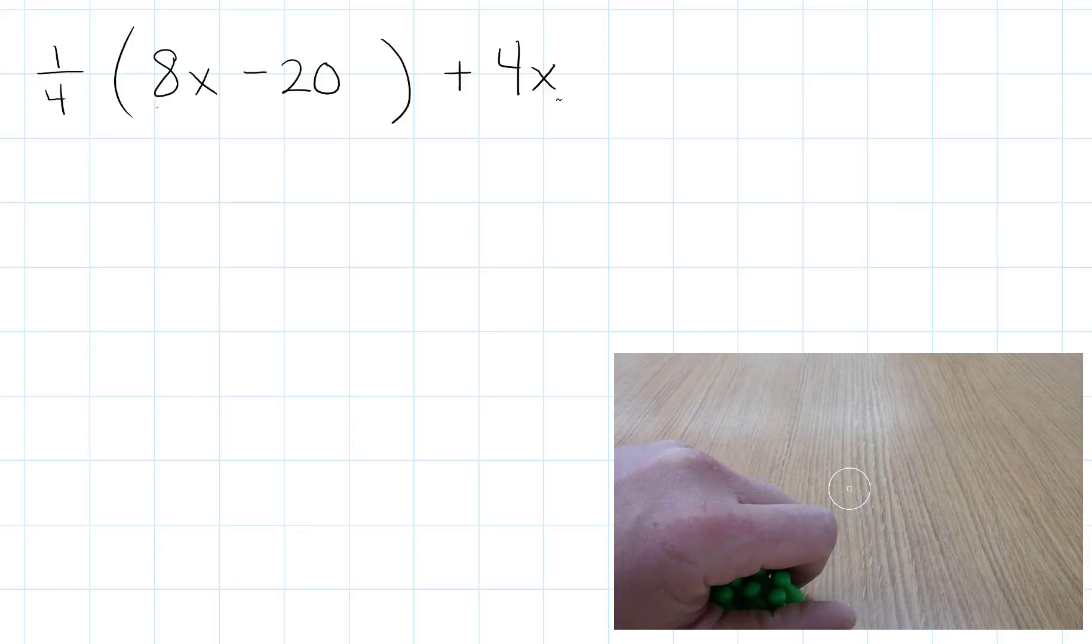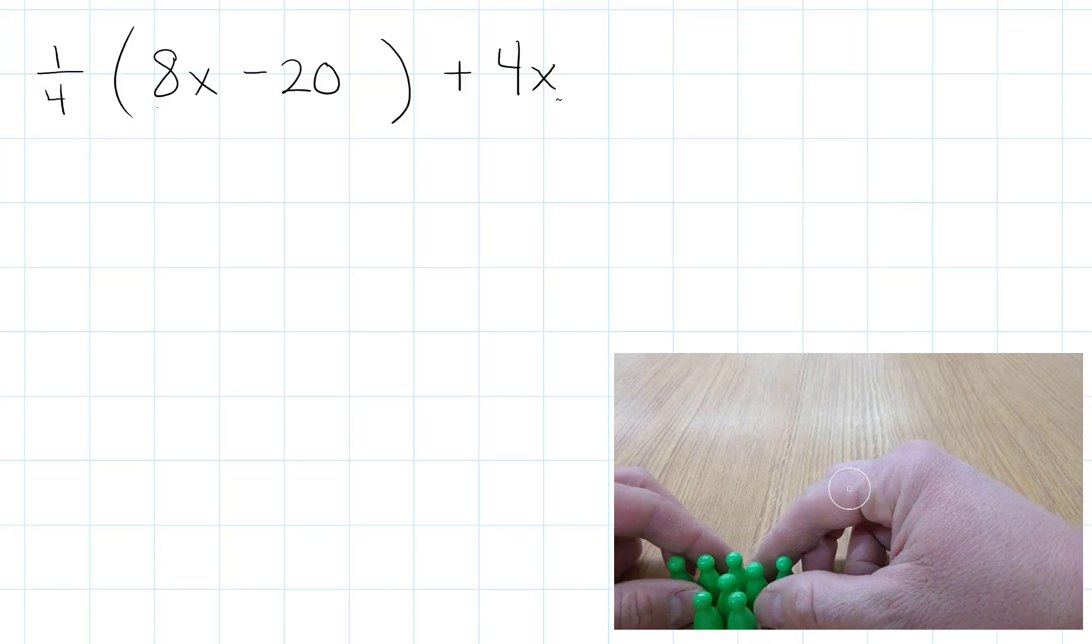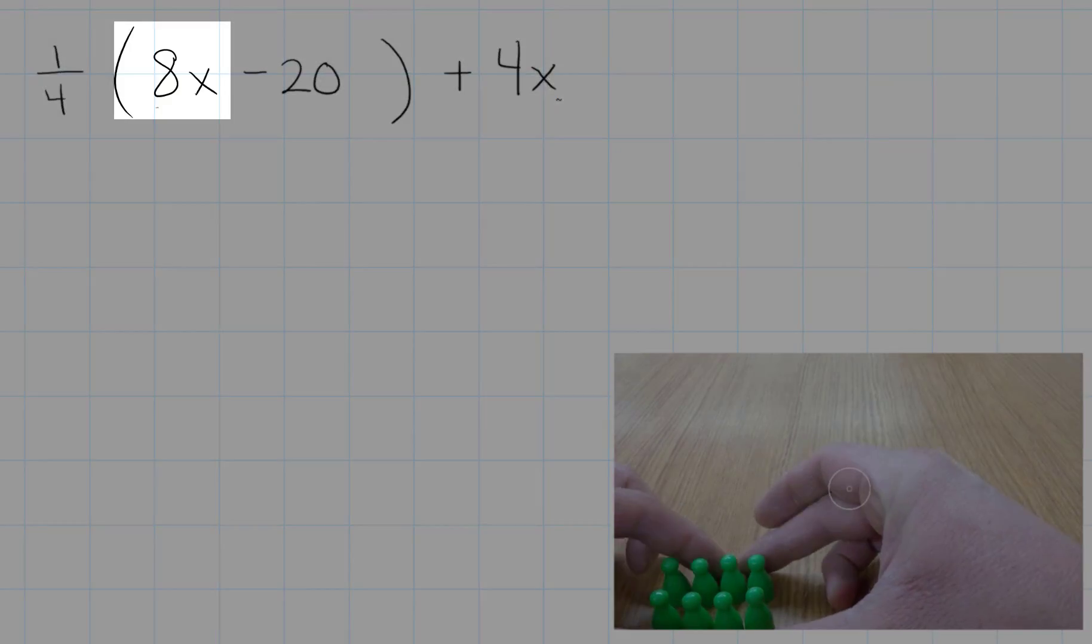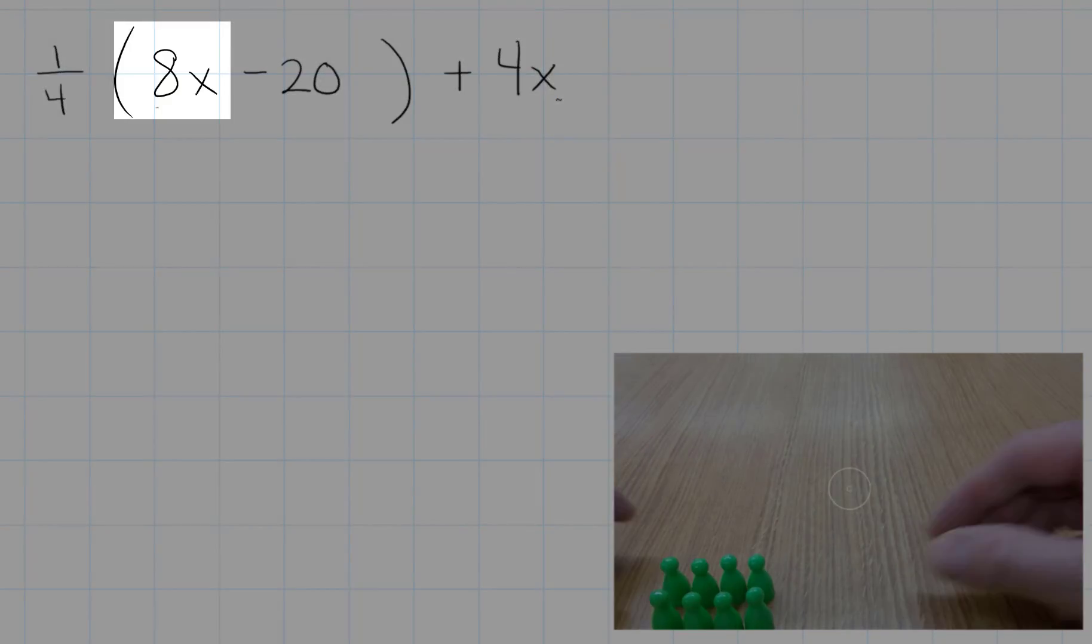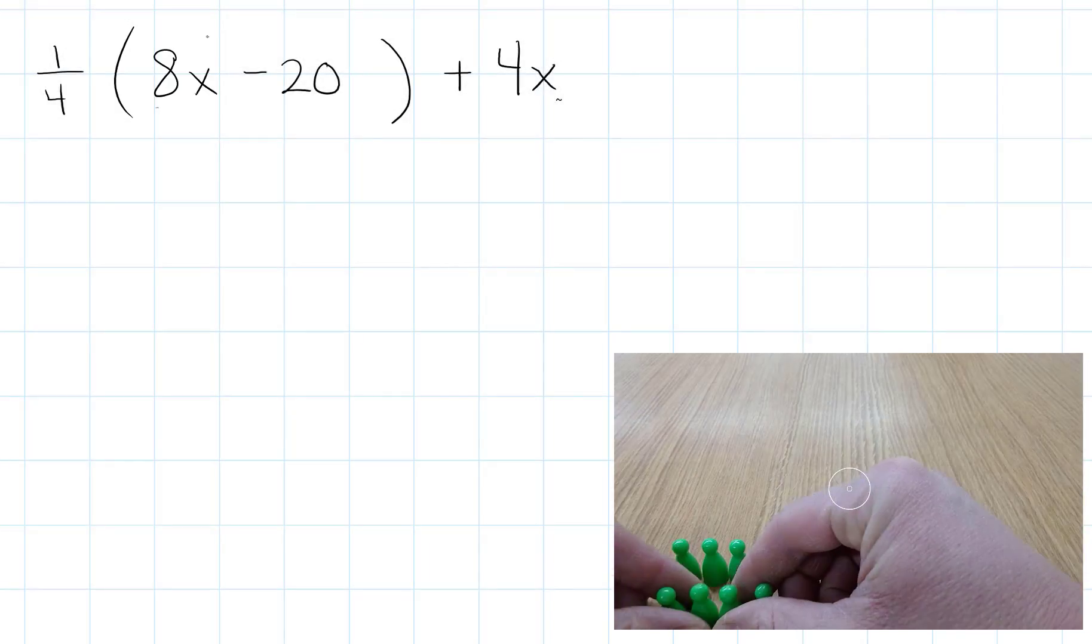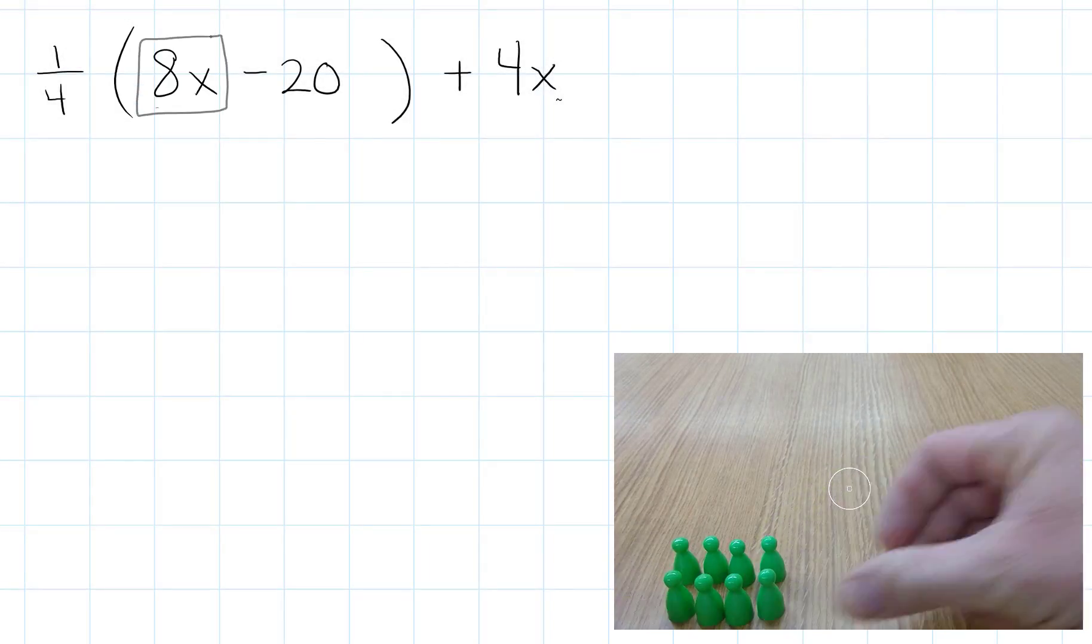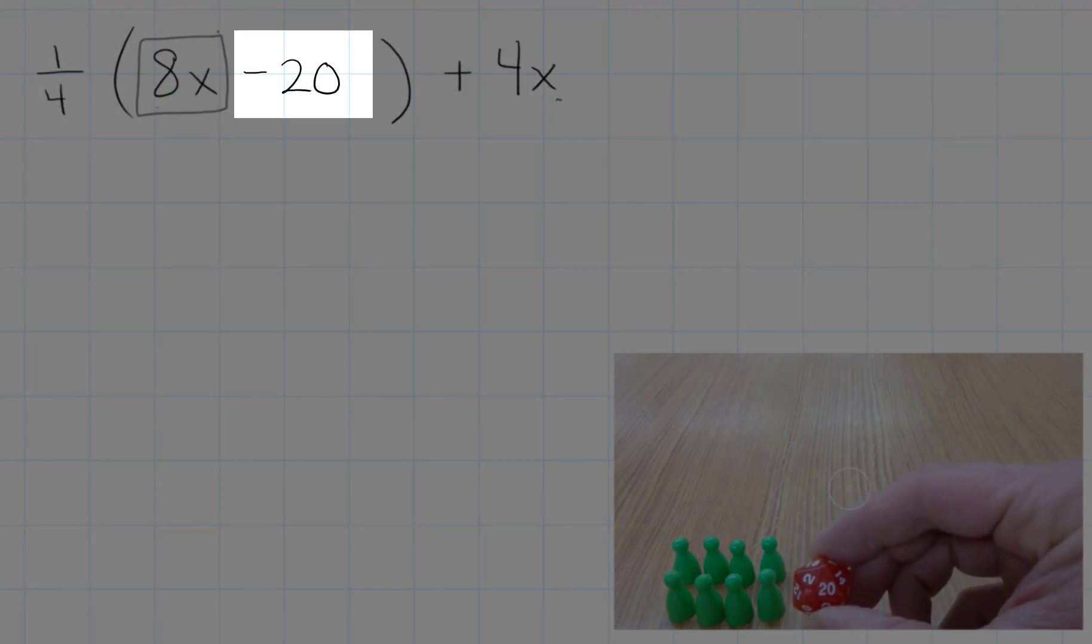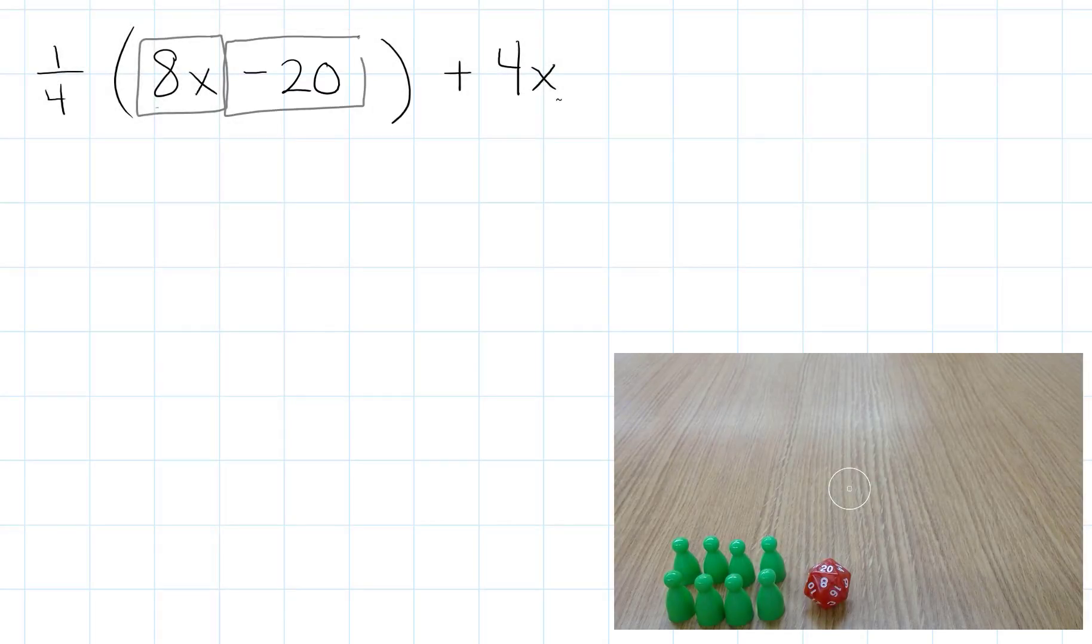So we're going to first set up inside of the parentheses and understand that we have 8x's. And we also have a negative 20 that's inside of our parentheses. So those are our two terms, and we can represent those by 8 pawns, 8 positive pawns, so they're green, and a negative 20 on our red die.